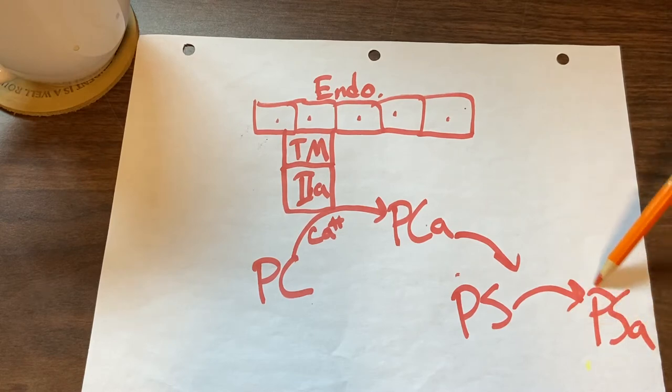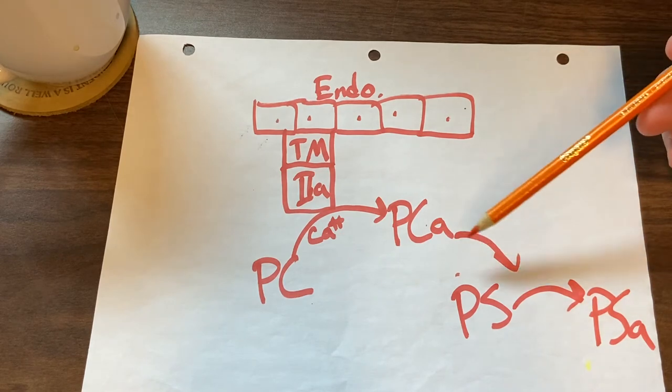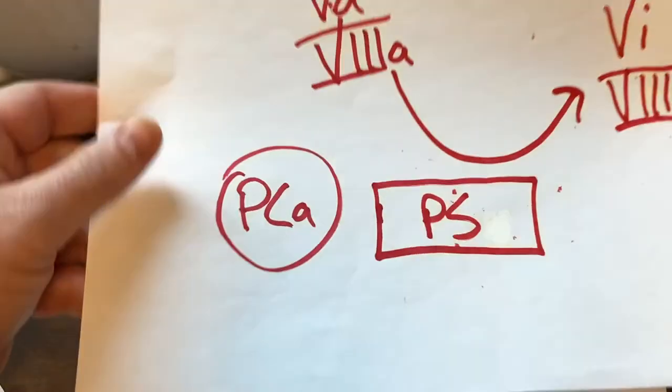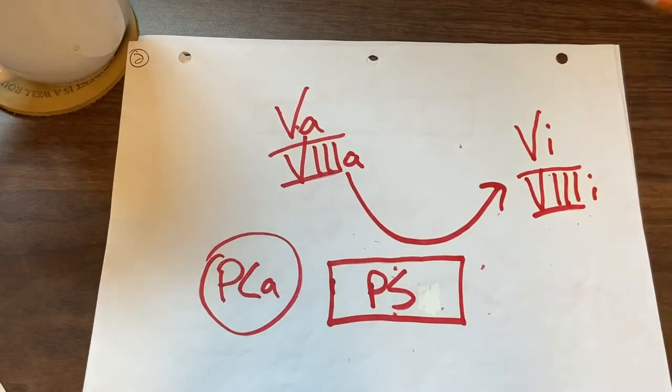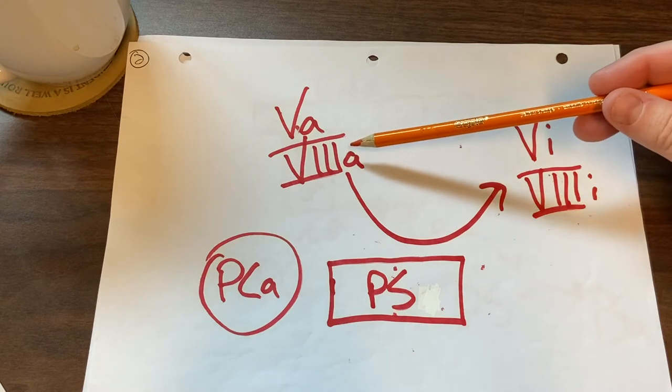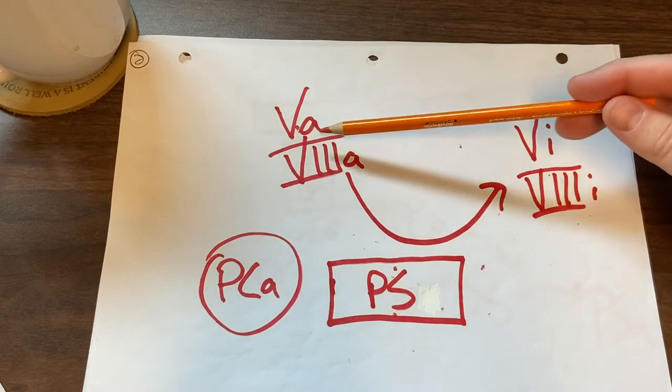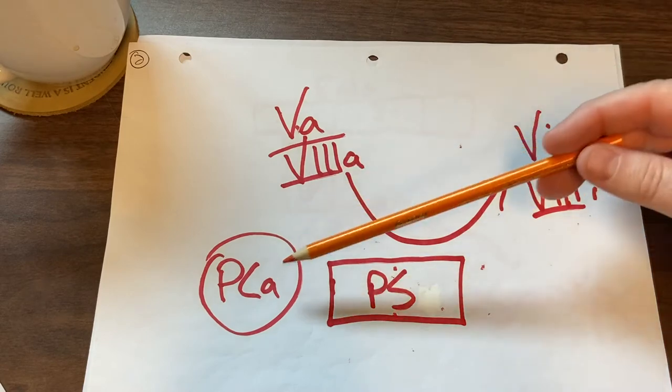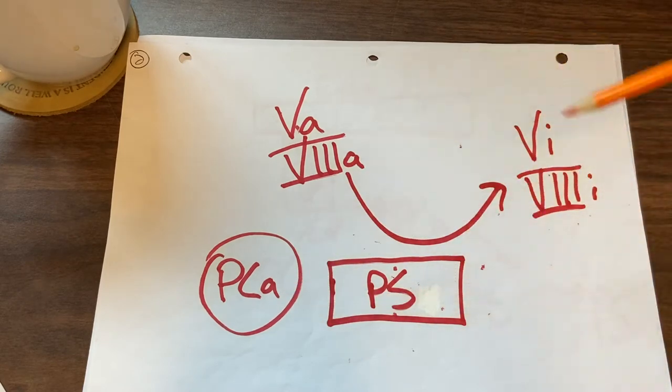That forms a complex, and that complex of activated protein C and protein S will inactivate factors 5a and 8a. So activated 8 and activated 5 get inactivated by this protein C and protein S complex.